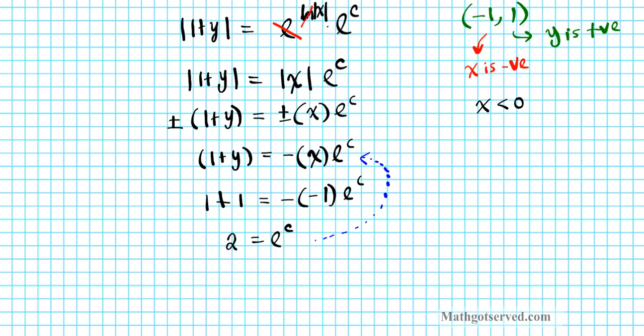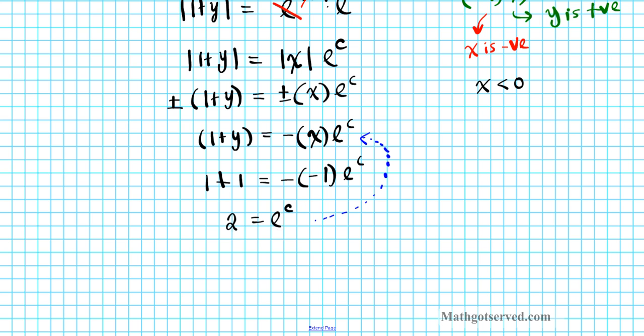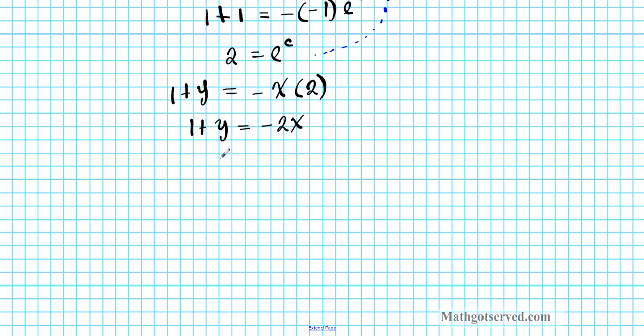Remember, the goal is to isolate y. That's the ultimate goal. So when we make this substitution, we're going to have (1 + y) = -x times 2. And then that yields (1 + y) = -2x. And then we get y by itself, subtract 1 from both sides. We have y = -2x - 1. So this is your particular solution and the domain is x < 0. So there goes your final result.